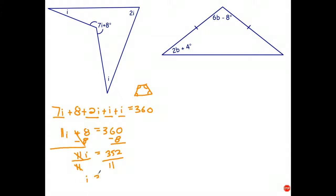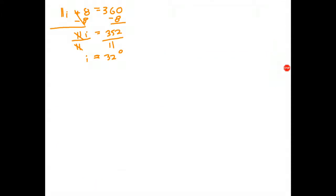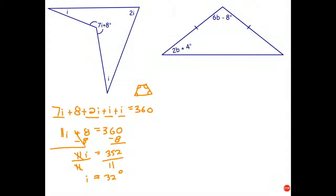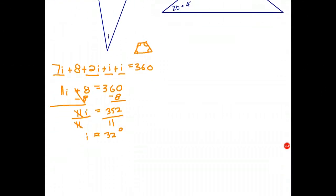And if you do that little calculation, i comes out to be 32 degrees. Okay, now once we know that, we can use that to work out the size of the angles. I'll just try to scroll a little bit more carefully. So therefore, 7i plus 8 is 7 by 32 plus 8. And if you do that calculation, you end up with 232 degrees.